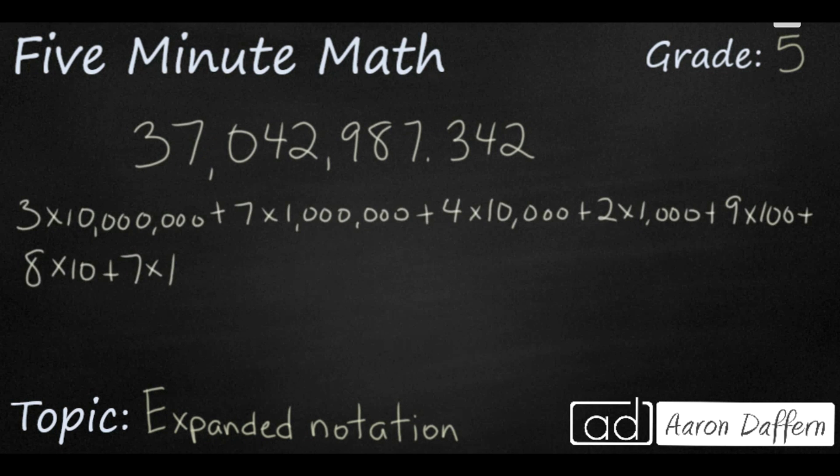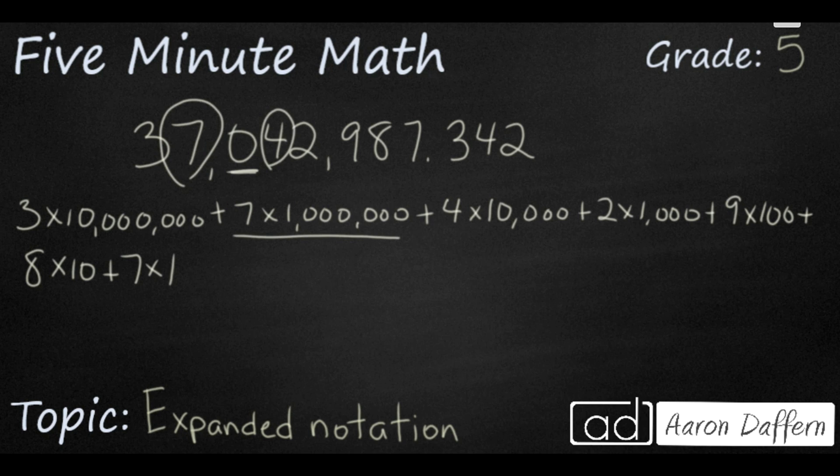The first part of expanded notation is typically pretty easy because you've already learned it in 3rd or 4th grade. So, I wrote out the whole number part of it. Realize that I skipped the 0 in the hundred thousandths place. I went straight from the 7 in the millions place to the 4 in the ten thousandths place. Remember, you do not include zeros.